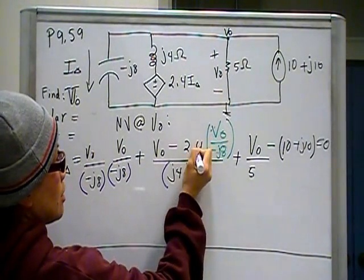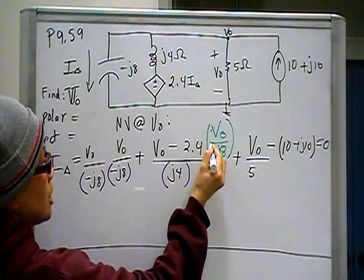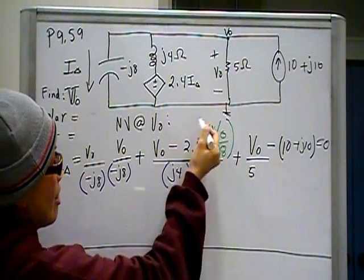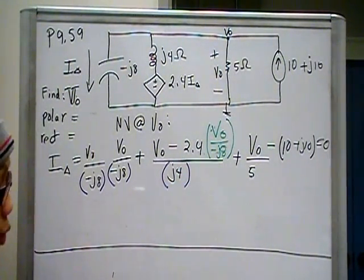And also remember, for this part, you need to do 2.4 divided by, again, wrap the denominator into minus J8. And then that result gets divided by J4. And then the rest is algebra.